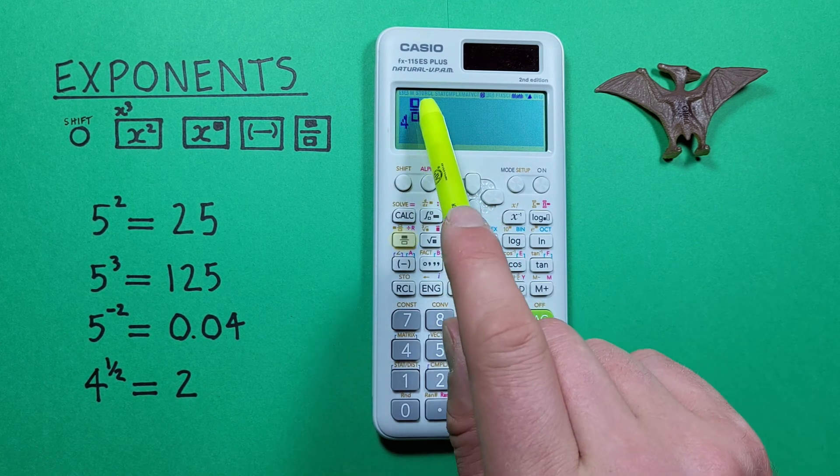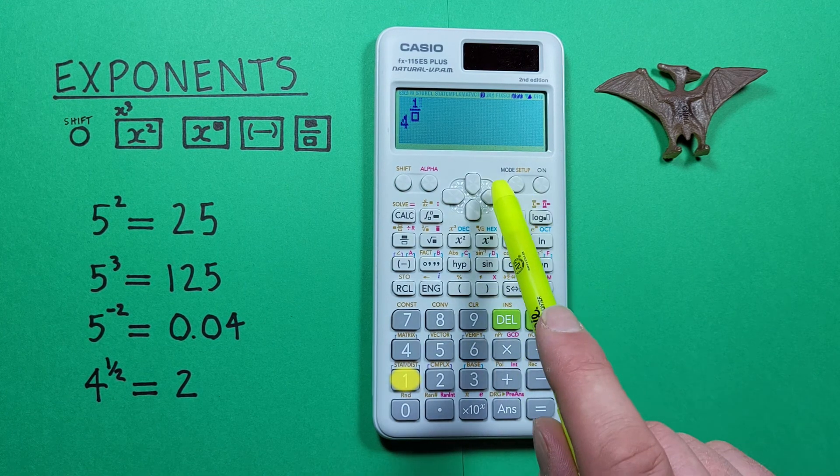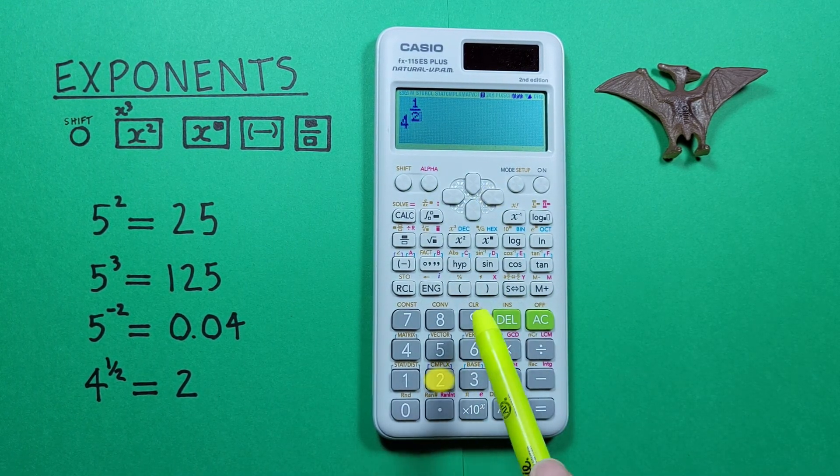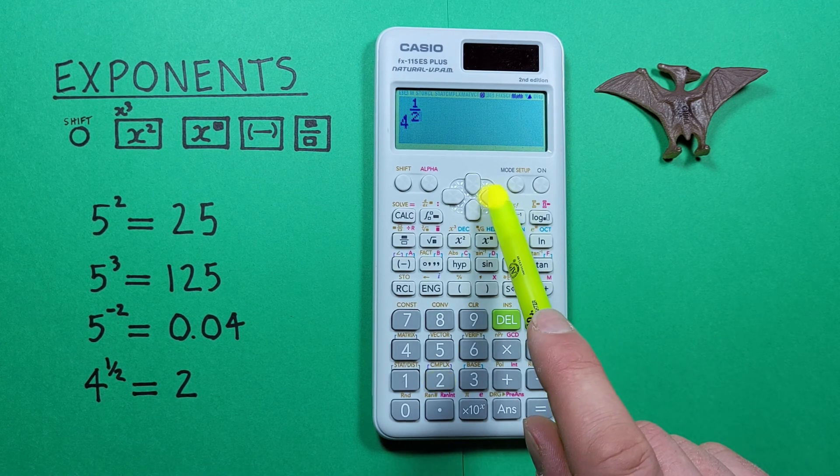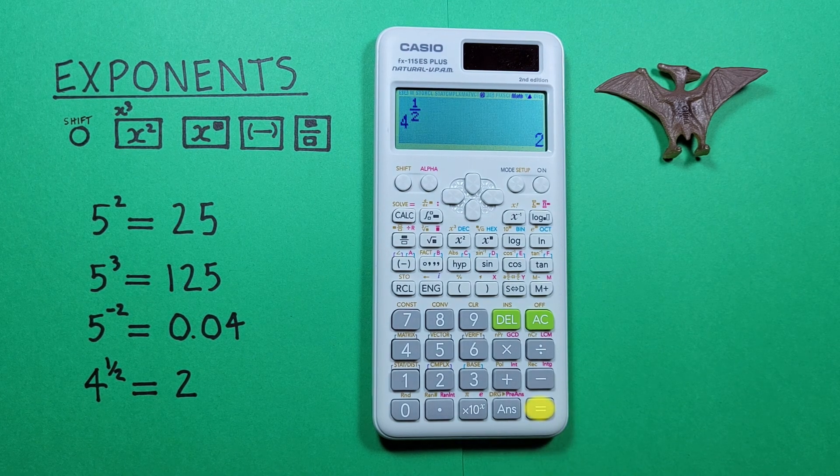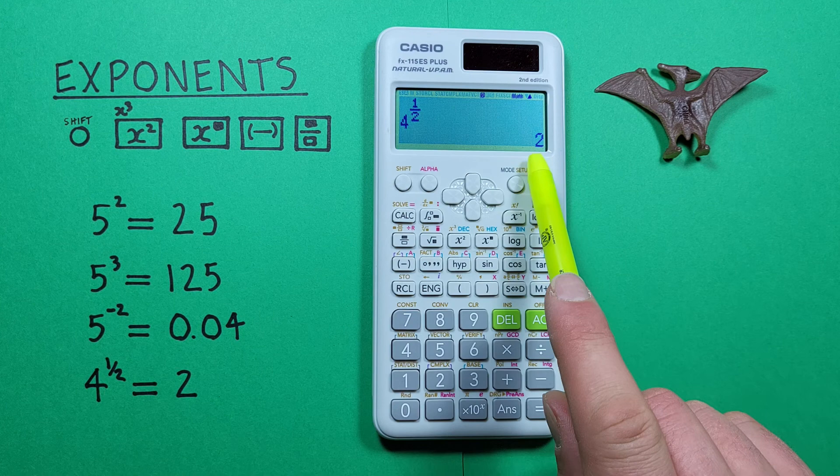There we have two boxes for our fraction. So we have 1 over 2, so we start with the 1, scroll over, and then the 2 at the bottom. And then scroll out of the exponent and press equals, and we get a result of 4 to the power of 1 over 2 is equal to 2.